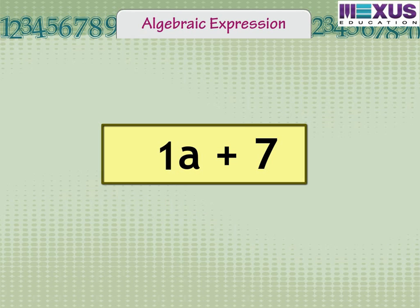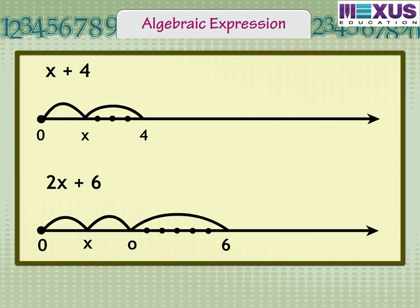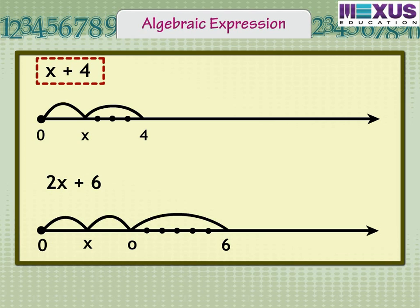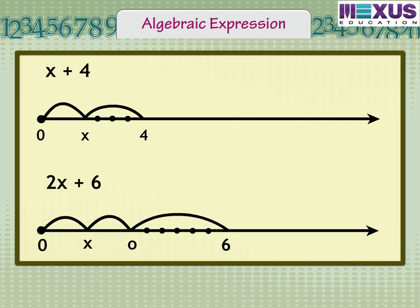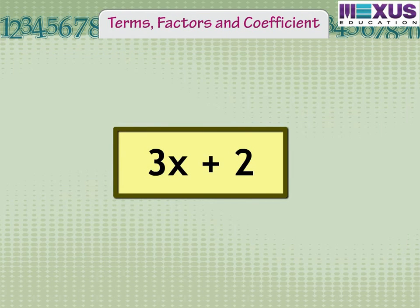Now let us see how an expression can be shown on a number line. Let us consider the expression x plus 4. Here x can be anywhere on the number line. The distance between 0 and a point is x plus 4. Similarly, for 2x plus 6, the value of x is twice, so the distance is 2x, and from that point to the end is 2x plus 6.